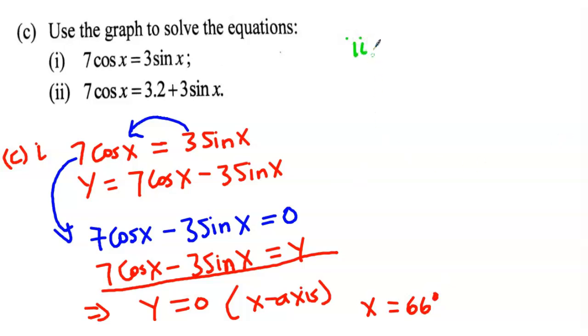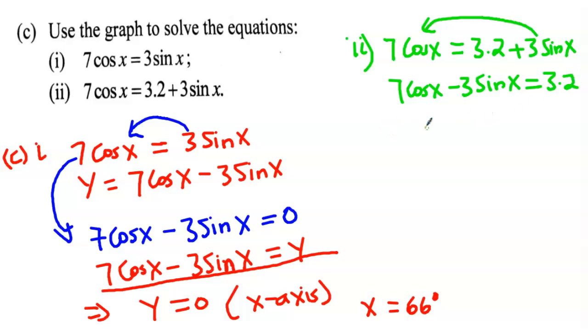Let's move on to part ii. Part ii has been given as 7 cos x equals 3.2 plus 3 sin x. We want to make it look like the given, the one that we did graph. So we are going to bring this one over here. And we get 7 cos x minus 3 sin x equals 3.2. So we compare it with the given. The given was 7 cos x minus 3 sin x equals y. So when we cross everything, we realize that y equals 3.2.